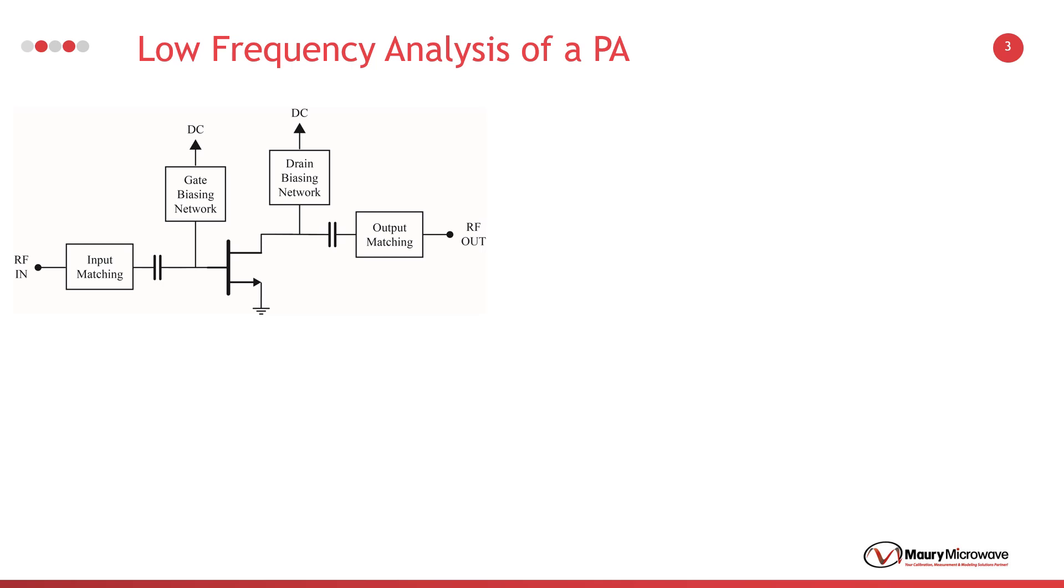In this slide, we will explain the low frequency response of a transistor using a basic amplifier structure. A traditional RF amplifier consists of four blocks: input matching, input biasing network, output biasing network, and the output matching network.